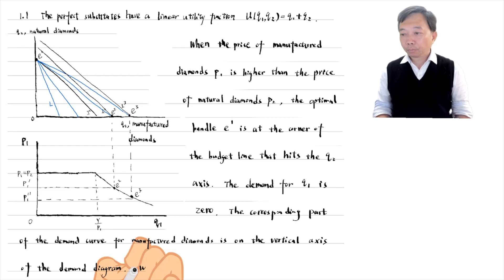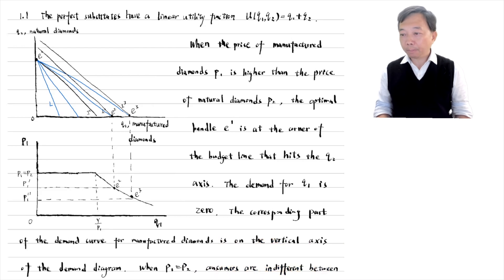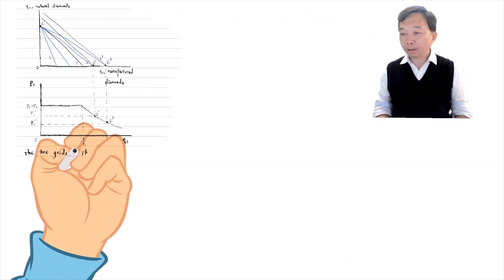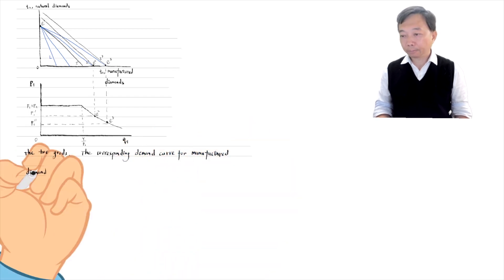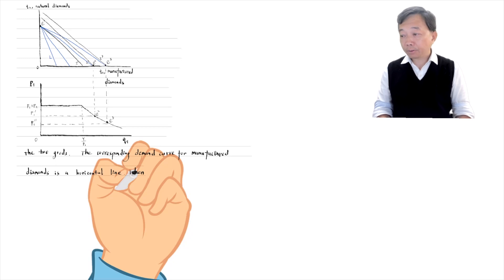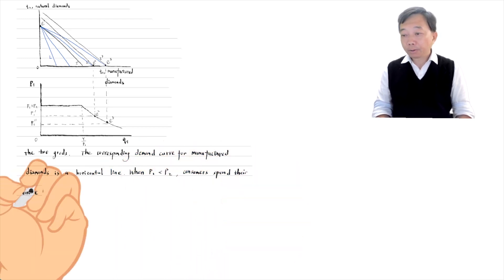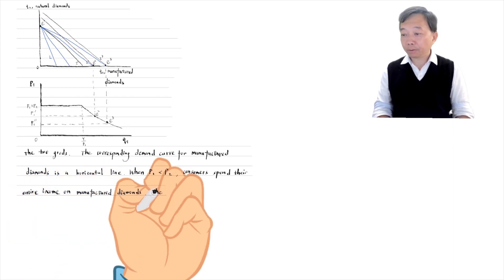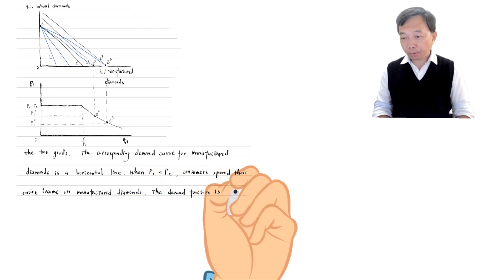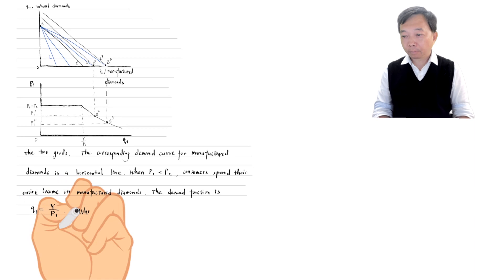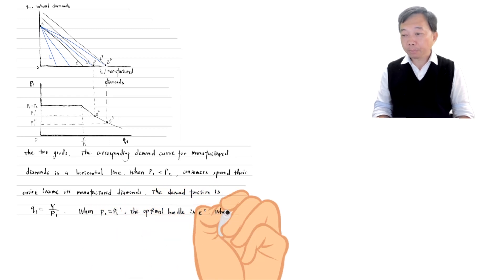When the prices of manufactured diamonds are identical, consumers are indifferent between the two goods, and the corresponding demand curve for manufactured diamonds is a horizontal line. When manufactured diamonds are less expensive than natural diamonds, consumers spend their entire income on manufactured diamonds. The demand curve is Q1 equals Y over P1. For example, when the price of manufactured diamonds becomes P1', the budget line becomes flatter and consumers choose bundle E2, the corner solution where the budget line hits the Q1 axis.